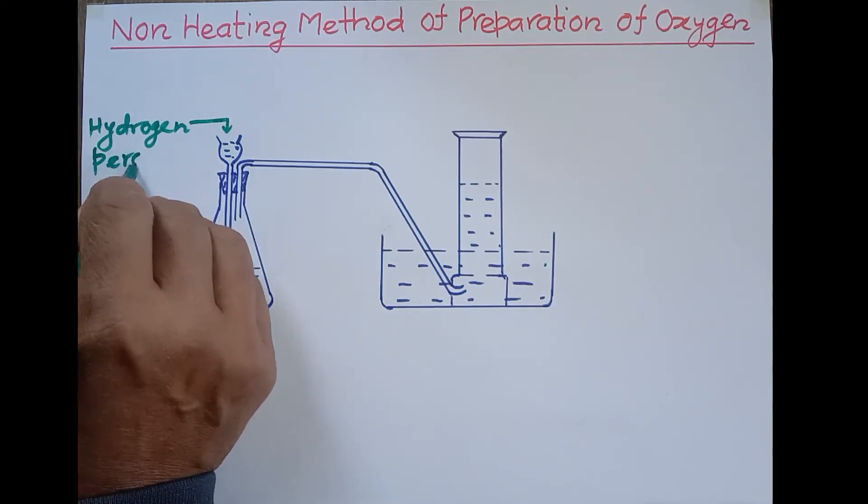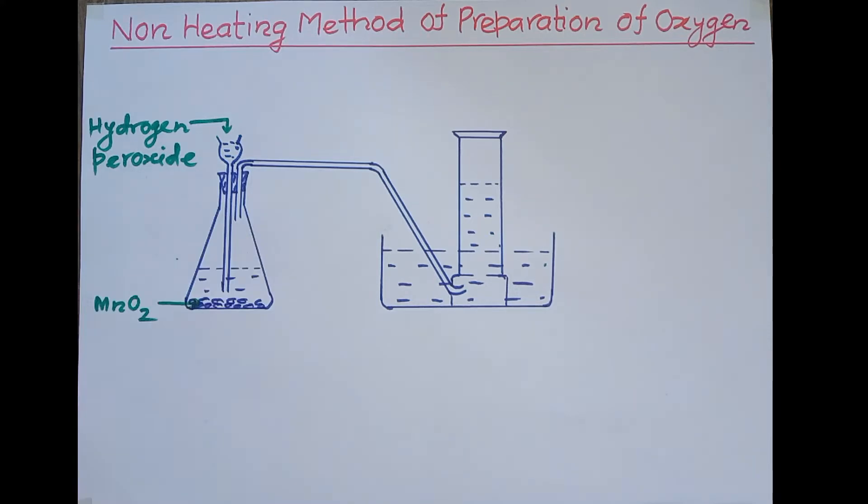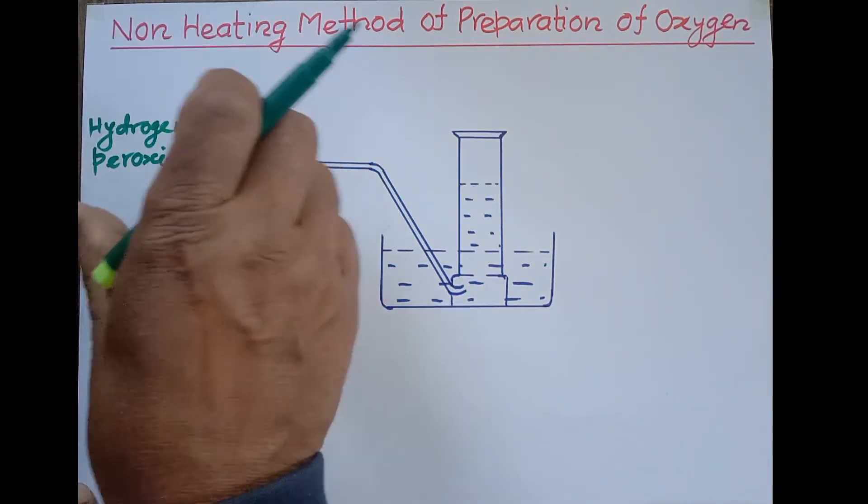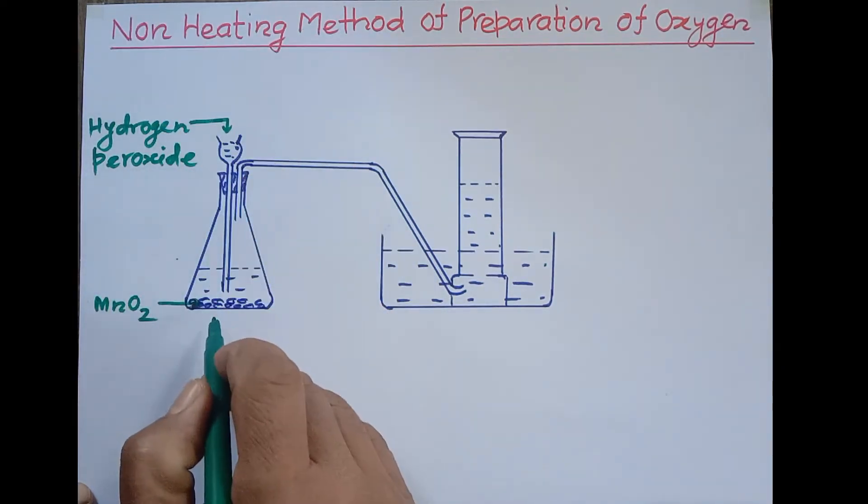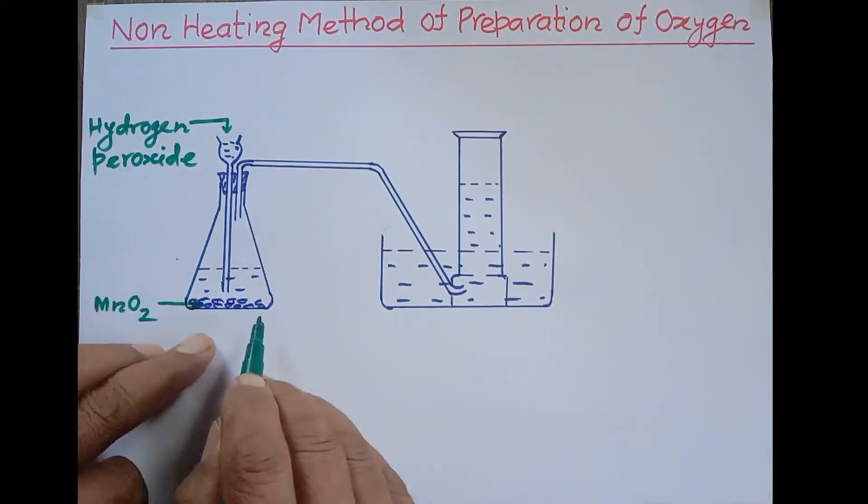The liquid is hydrogen peroxide. This is hydrogen peroxide, a liquid which appears like water and is an unstable compound. This hydrogen peroxide is poured from the thistle funnel.